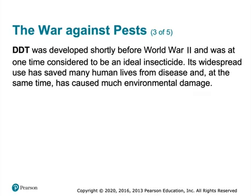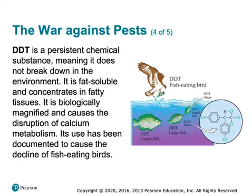DDT was a very widely used pesticide. It's a persistent pesticide, meaning it sticks around for a long time, and it killed lots and lots of mosquitoes — the deadliest animal to humans as a vector disease carrier. It was an ideal insecticide, but it turned out to cause much environmental damage — specifically, it caused eggshells to get soft in birds of prey, and it bioaccumulated.